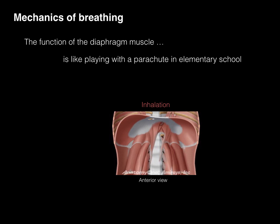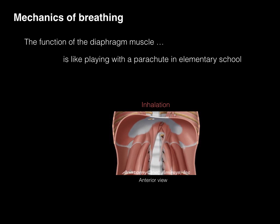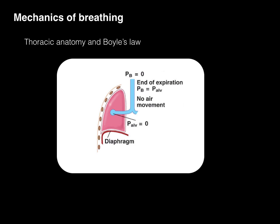When the diaphragm shortens, you make the lungs above it bigger. When the volume gets bigger in the lungs, the pressure decreases, creates a suction, and we pull air in. Then the diaphragm relaxes, the lungs get smaller, and air is forced out — inhaling, exhaling, contraction, relaxation. It functions similar to that parachute in school.